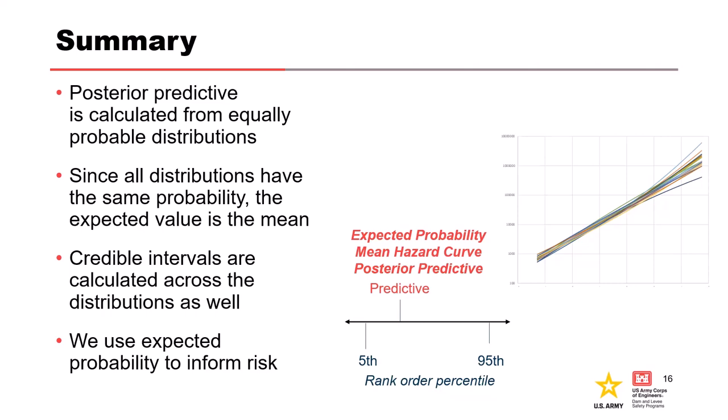Since all distributions have the same probability or all distributions are equally likely to occur, then the expected value can be simplified down to just a mean. You're just basically averaging the annual exceedance probability associated with a specific discharge of interest. You'll do that for several different discharges and then you'll interpolate a curve between those points. Credible intervals are calculated vertically or using a vertical slice across a given annual exceedance probability. The 5th and 95th rank order discharges are used to inform the 90% credible intervals. We always use expected probability to inform risk, especially when we're developing the hydrologic hazard curve. You want to use the expected probability curve, not the mode curve.